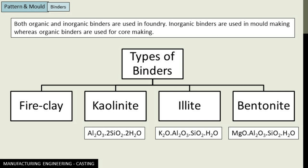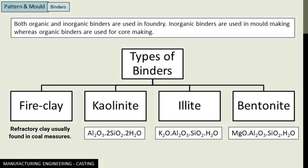Out of the inorganic binders, clay is the most common kind — fire clay, kaolinite, illite, and bentonite being the most popular ones. Fire clay is a refractory clay usually found in coal measures. Kaolinite's general composition is Al₂O₃·2SiO₂·2H₂O; it is one of the decomposition products of slow weathering of granite and basalt, basalt being a kind of black rock.